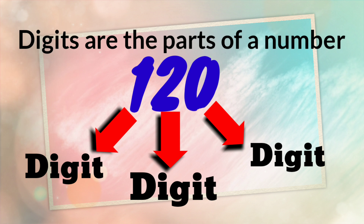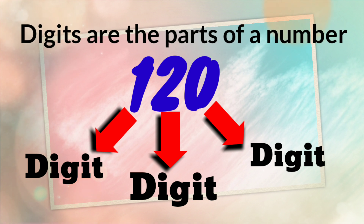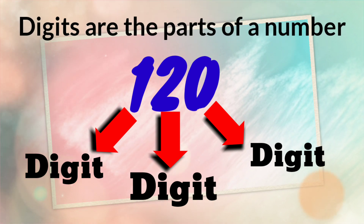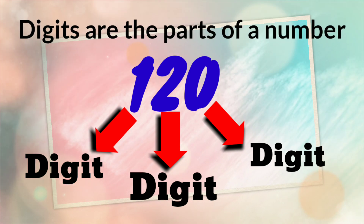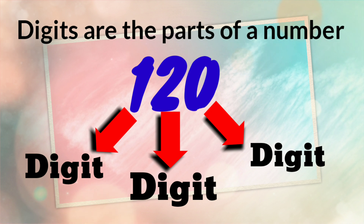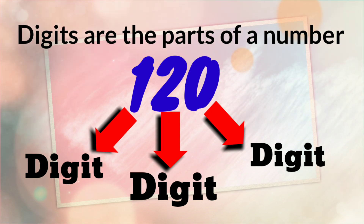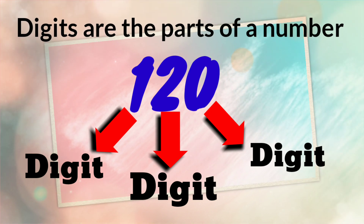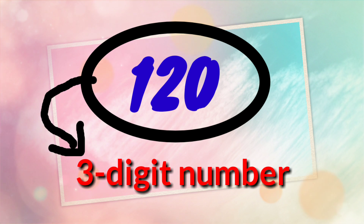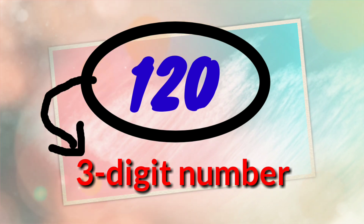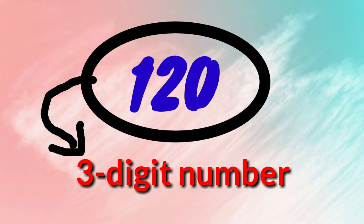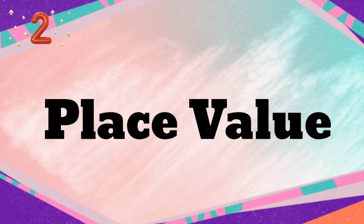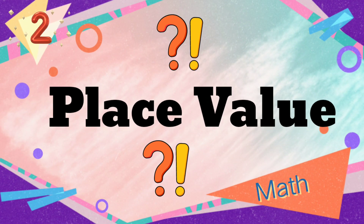For example, we have the number 120. In 120 we have three digits: zero, two, and one. So 120 is a three-digit number. Next, we have the word place value.